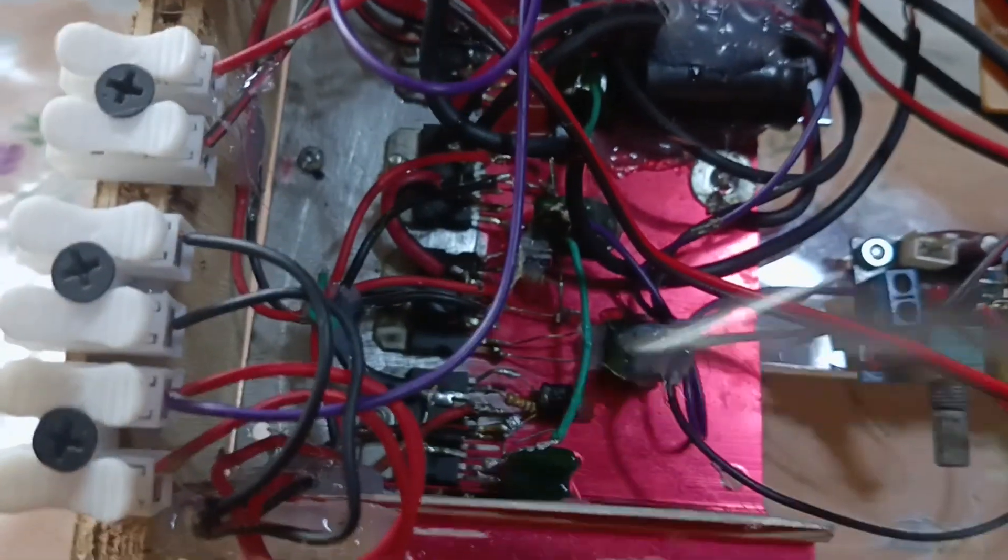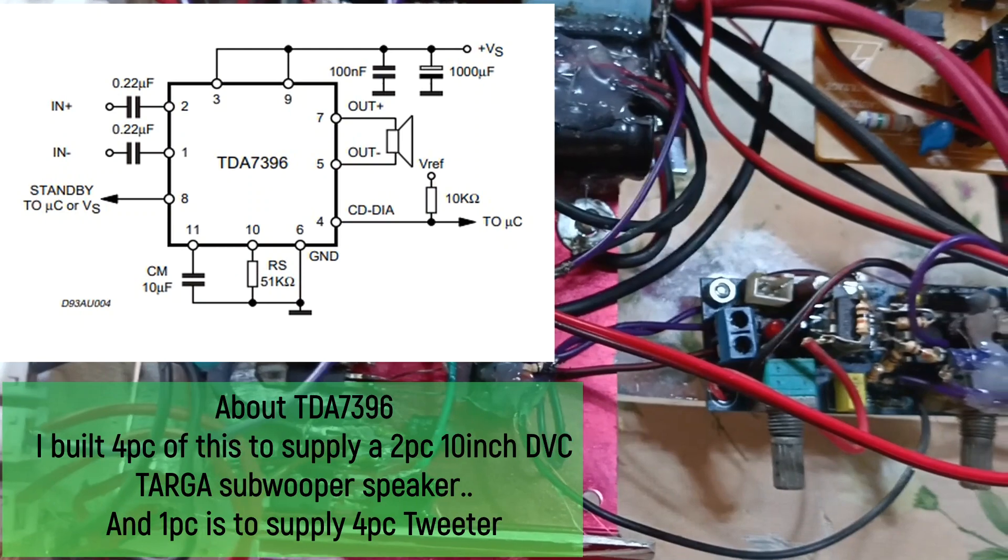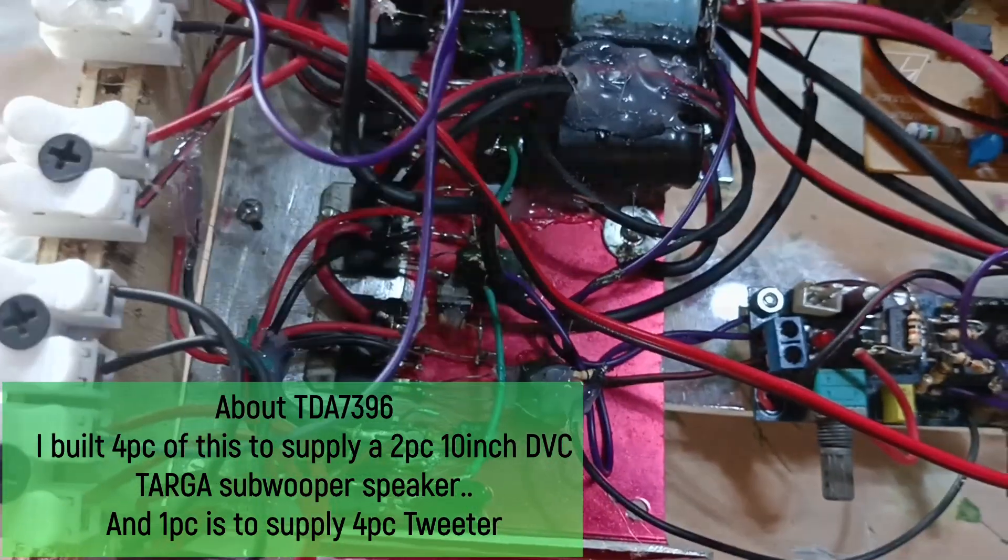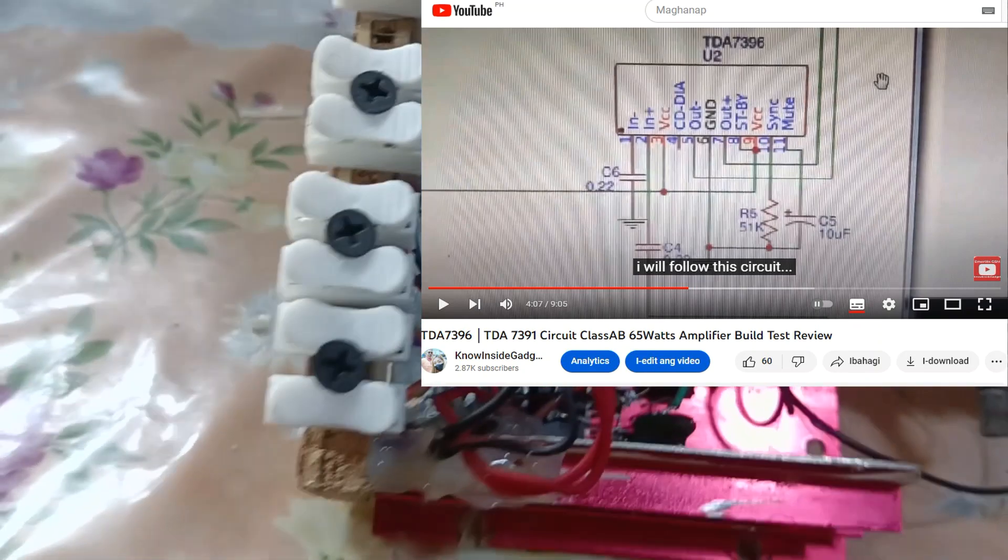Tapos, ito yung aking amplering homemade na ginawa. Limang IC. Makikita nyo dyan sa screen, natipa-plug ko kung paano ko kinapit sa DBC na targa. At ito yung output niya, mga connector.